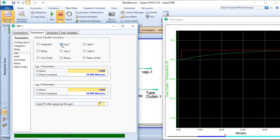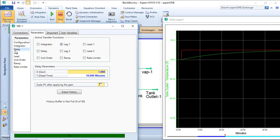Let's also add a delay to correspond to a long pipe. Go to the Delay tab, select the Delay checkbox, and change the dead time to 2 minutes.